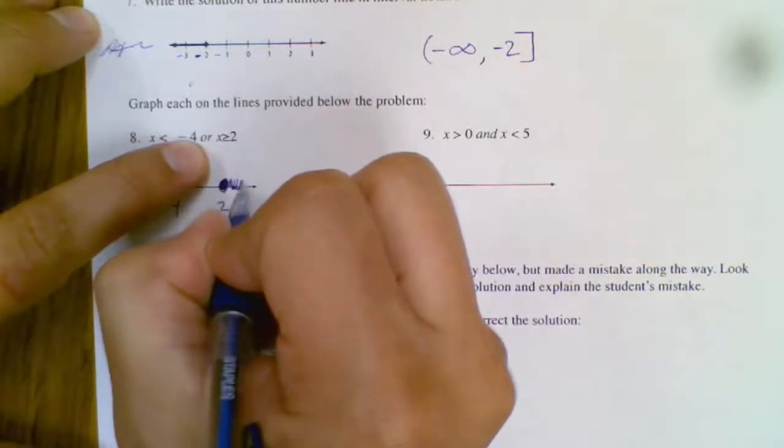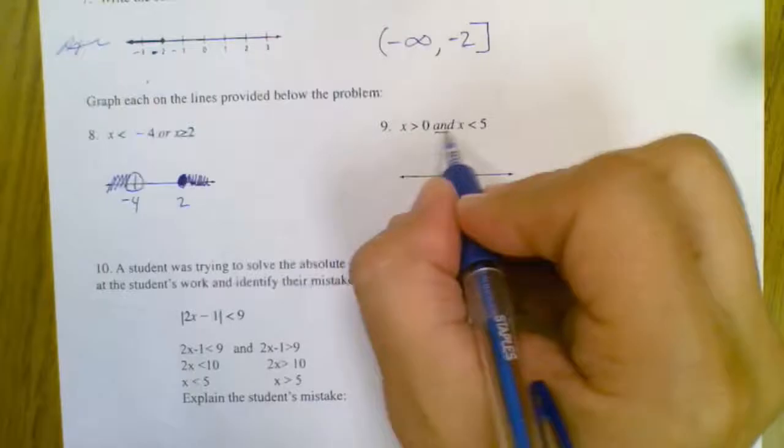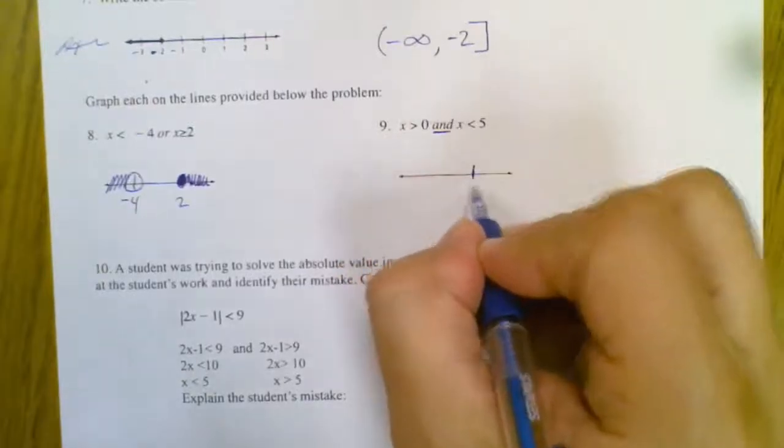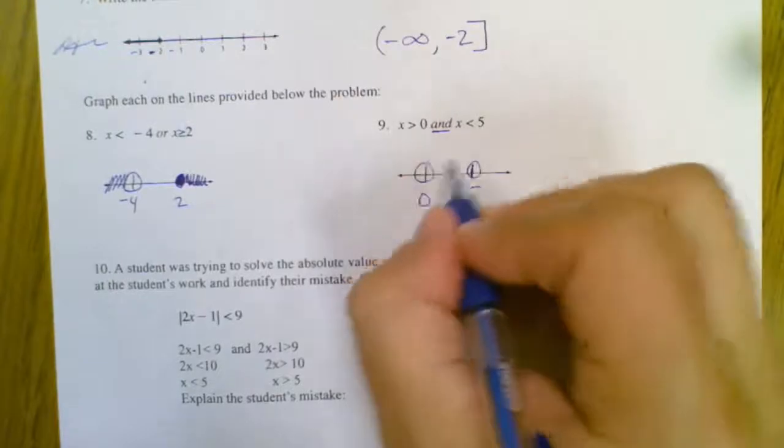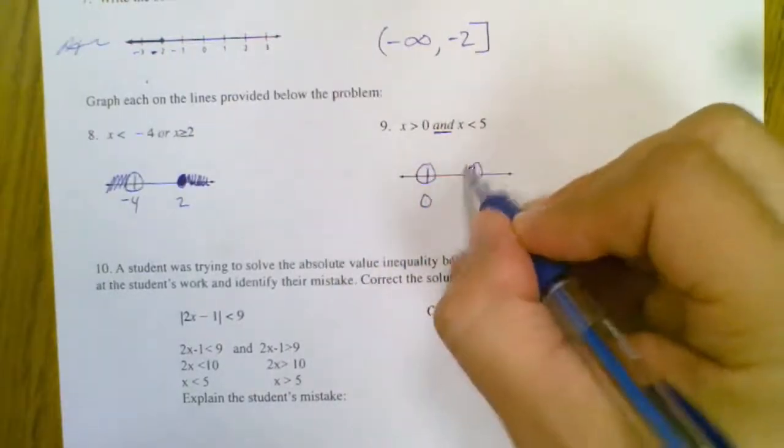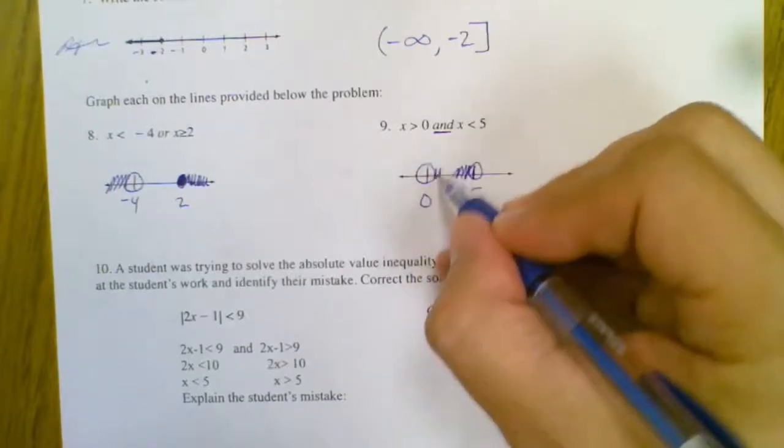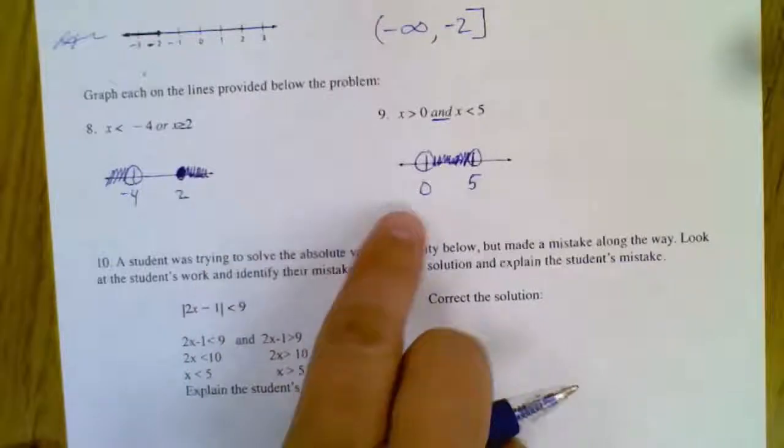And now here's an and, so it should be between them. Here's 5 and 0. We have open circles on both because they're both less than and greater than. And it's going to be on the smaller side of the 5, the bigger side of the 0. They overlap in the middle. That's what an or looks like, that's what an and looks like.